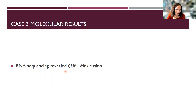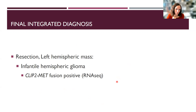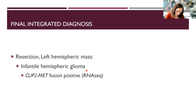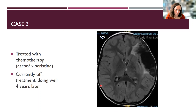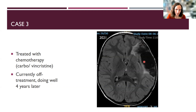This particular patient had a CLP2-MET fusion identified on RNA sequencing, allowing us to generate the final integrated diagnosis of infantile hemispheric glioma, CLP2-MET fusion positive. Currently these tumors are not graded according to WHO, probably because more experience with behavior is needed, but they really don't behave like grade 4 tumors. This patient was treated on a short course of carboplatin and vincristine, is currently off treatment and doing very well four years later, with his most recent 2021 imaging showing only the resection cavity and a little T2 signal at the edges, no evidence of recurrence.